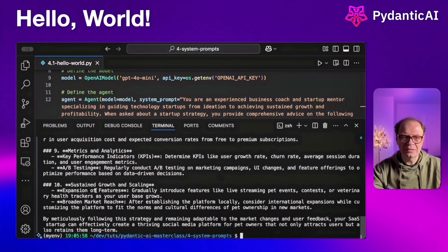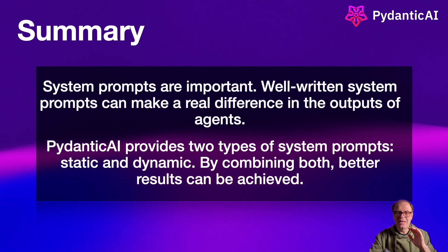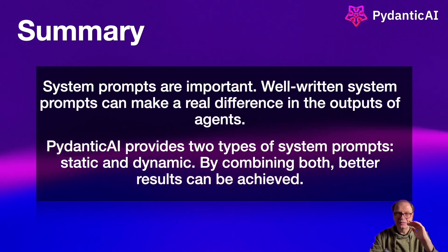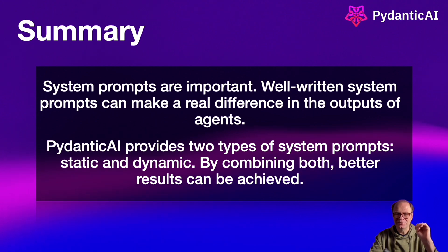So it's not super helpful, but still it's better than calling the plain agent without any system prompt. This is the hello world — a quick example with a simple system prompt. Well-written system prompts can make a real difference in the outputs of agents. Pydantic AI is great because it provides two types of system prompts — static and dynamic — and by combining them, better agent results can be achieved.